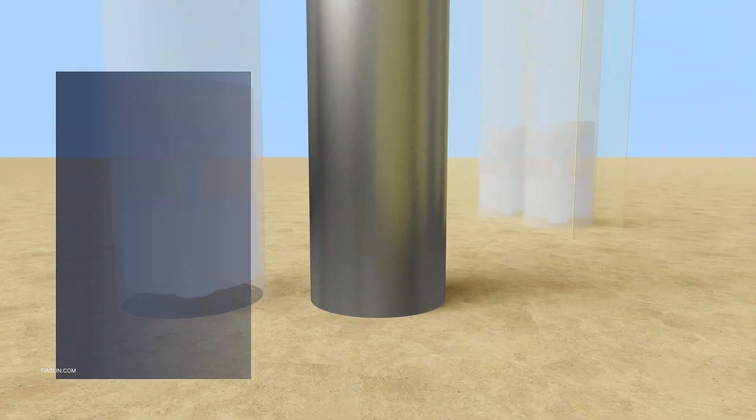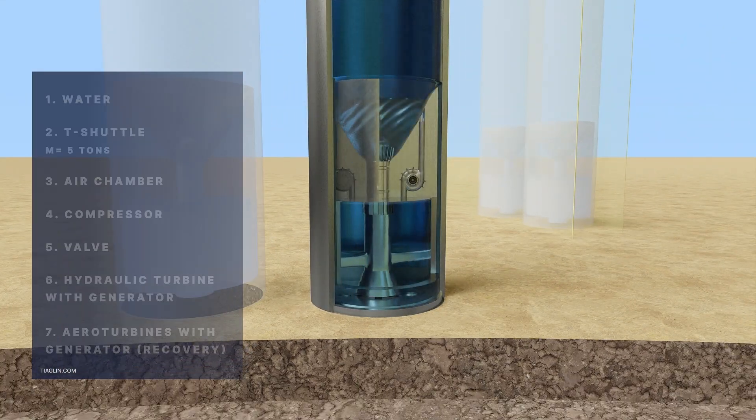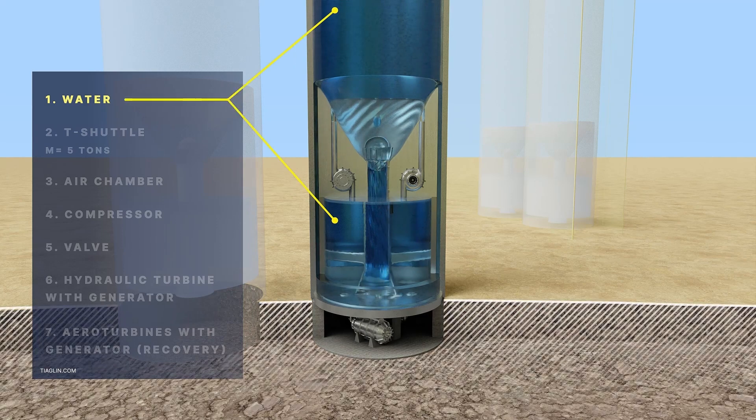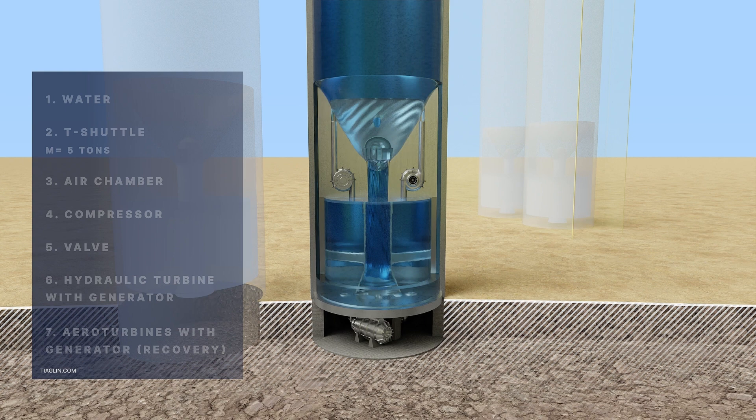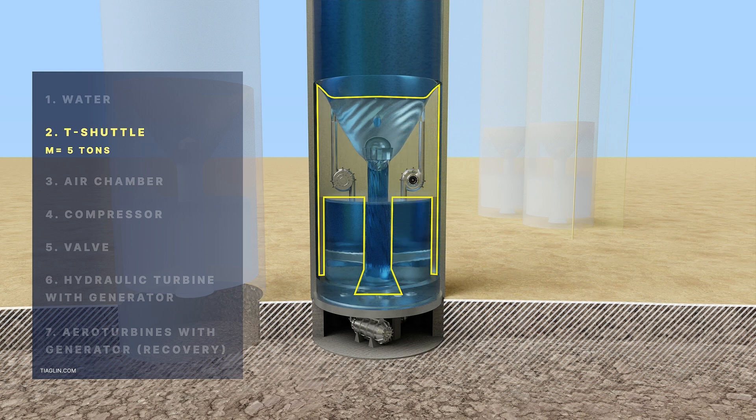The solution is a cylindrical body filled with water in which a T-Shuttle with a turbine mounted on it is placed. The T-Shuttle is provided with means for giving it positive or negative buoyancy in the form of cavities filled alternately with air or water.